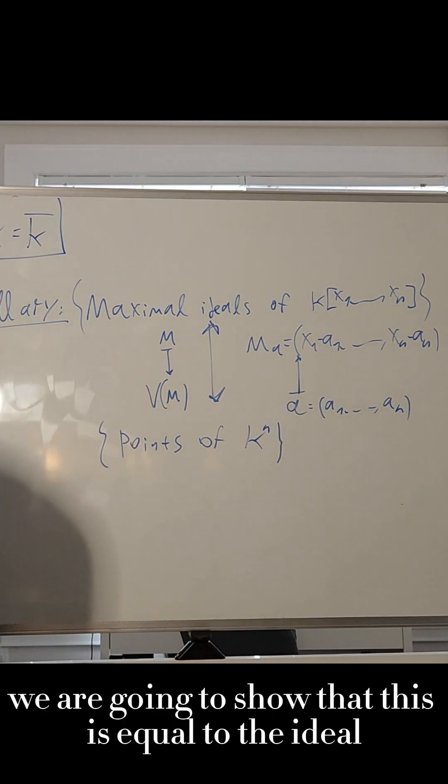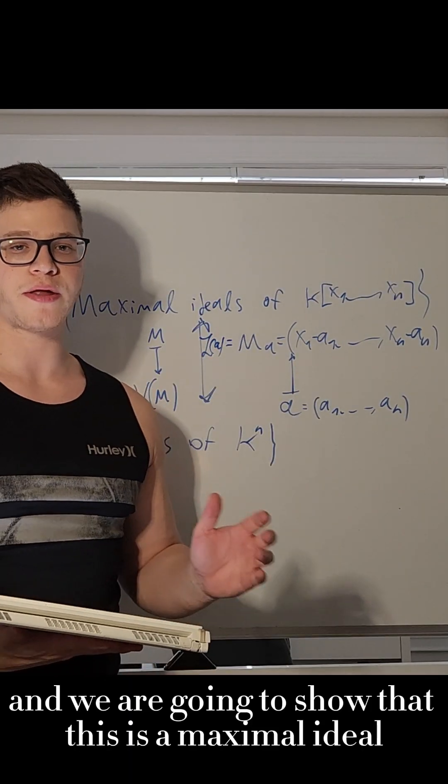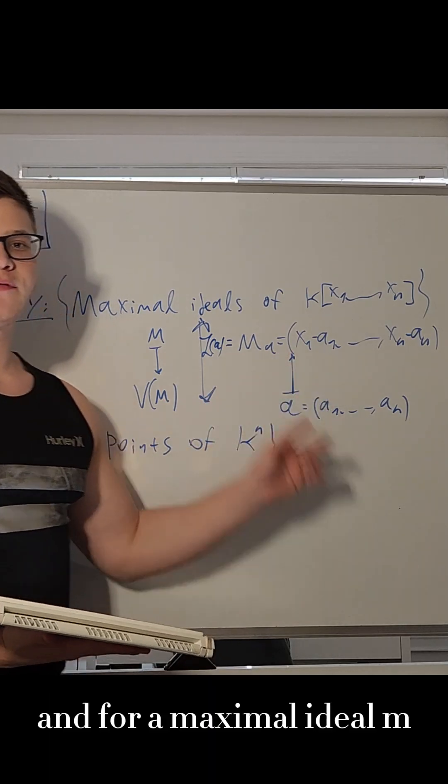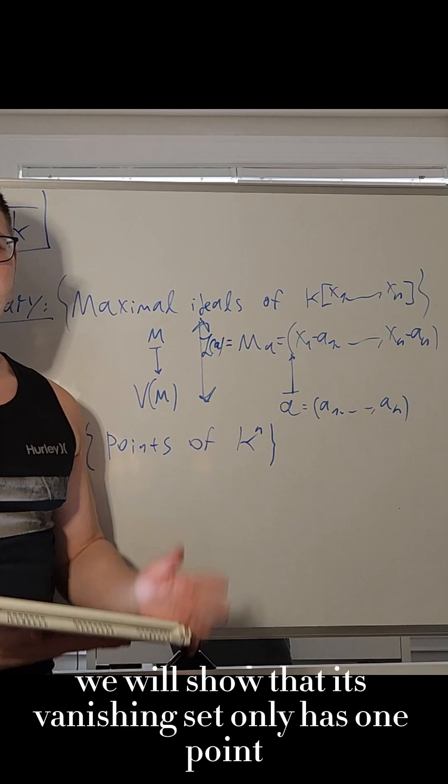So in particular, we are going to show that this is equal to the ideal of A, and we are going to show that this is a maximal ideal, and for a maximal ideal M, we will show that its vanishing set only has one point.